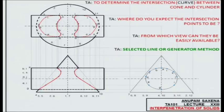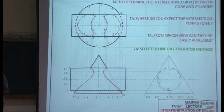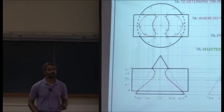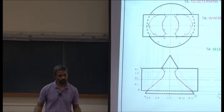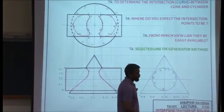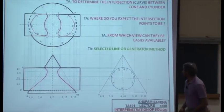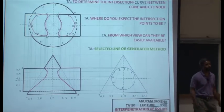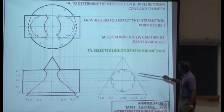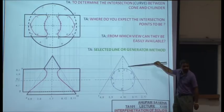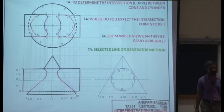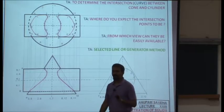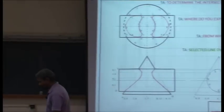To summarize the select line or generator method: first, observe the three views carefully. Second, figure out which view gives the most direct information about the intersection points — in this case it was the profile view. Then represent the surface of the cone using generator lines, which represent the slant surface. The intersection points are between the circle and these slant lines. Once you have the intersection points, label them carefully and transfer them onto the front view and the top view.